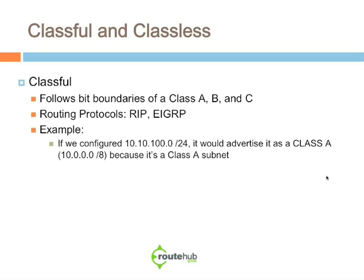Classful and Classless. A Classful routing protocol follows the bit boundaries of a Class A, Class B, and Class C. Some examples of a Classful routing protocol would be RIP and EIGRP.